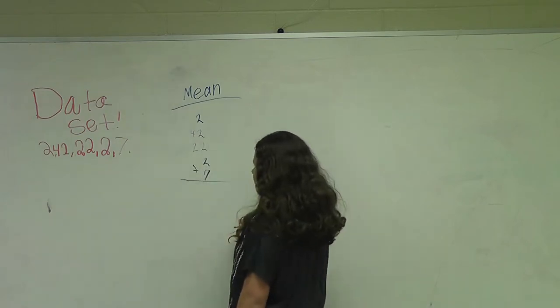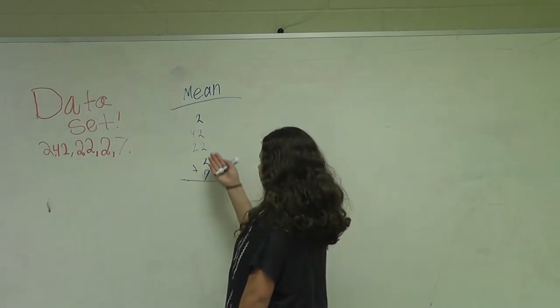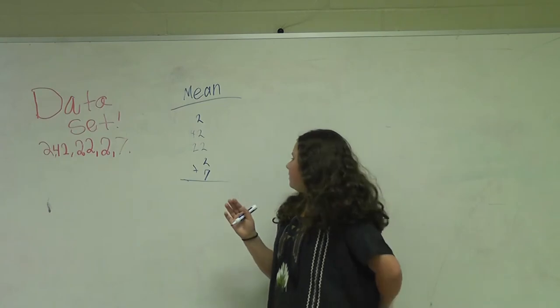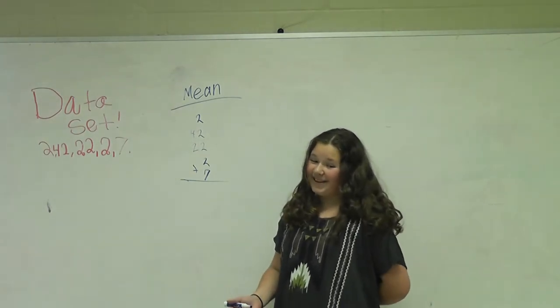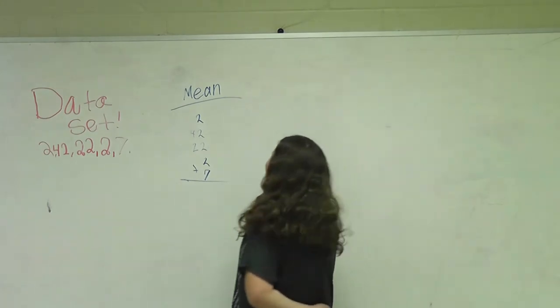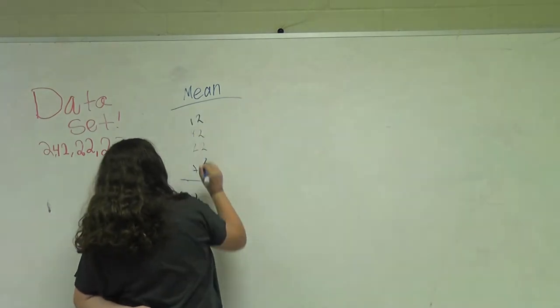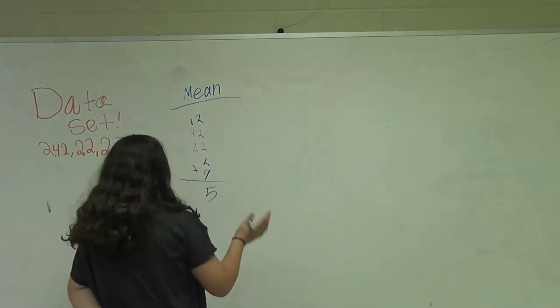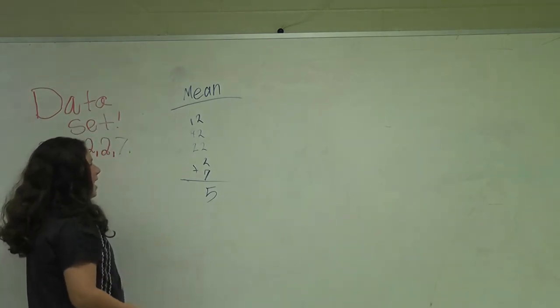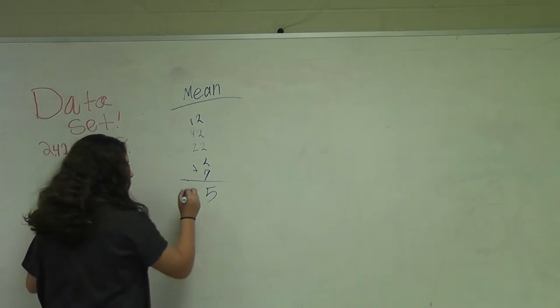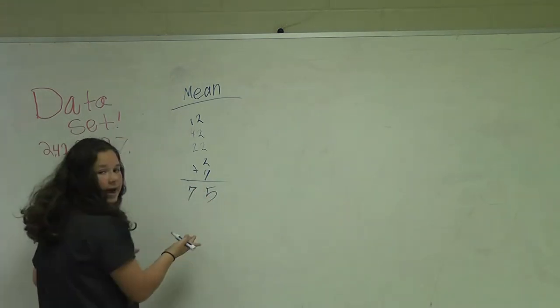Let me add them. 2 plus 2 is 4, 4 plus 2 is 6, 6 plus 2 is 8, 8 plus 7 is 15. So you want to put your 1 up here and your 5 there. So 1 plus 4 is 5, 5 plus 2 is 7. Your answer will be 75 if you do it right.